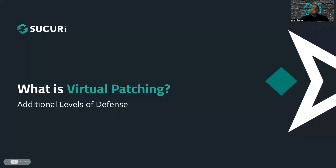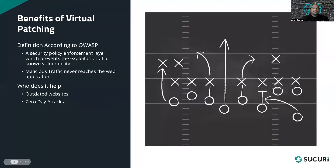So let's start with what is virtual patching. According to OWASP, virtual patching is defined as a security policy enforcement layer which prevents the exploitation of known vulnerabilities. The virtual patch works since the security enforcement layer analyzes transactions and intercepts attacks in transit. This means malicious traffic never reaches the web application. The resulting impact is that, while the actual source code of the application itself has not been modified, the exploitation attempt does not succeed.